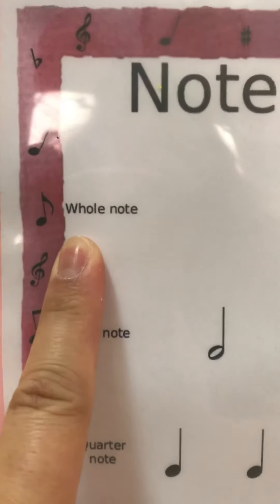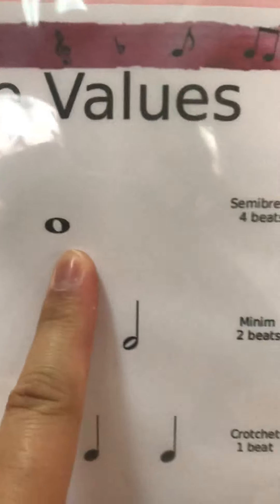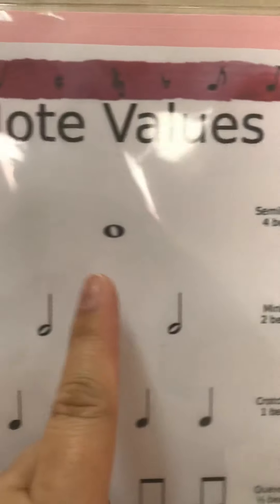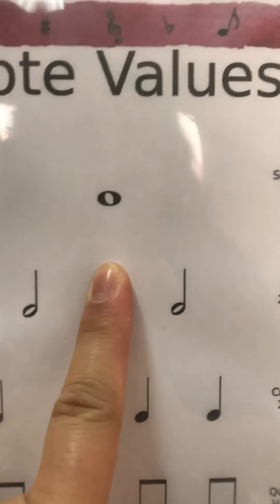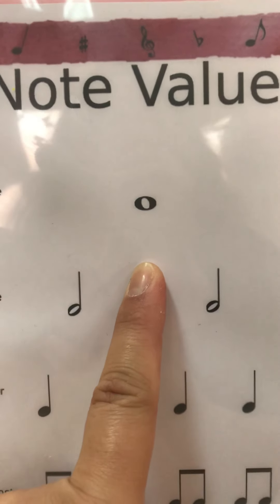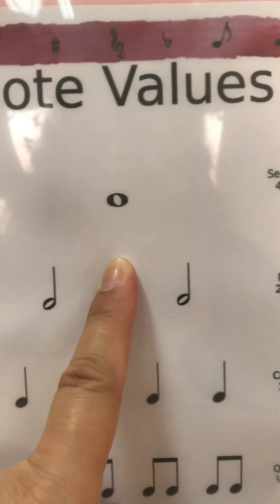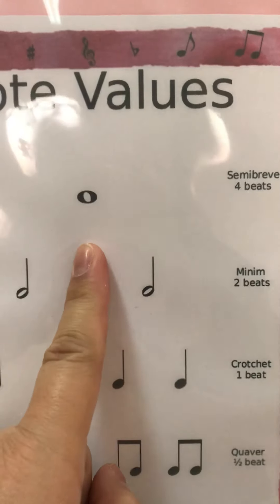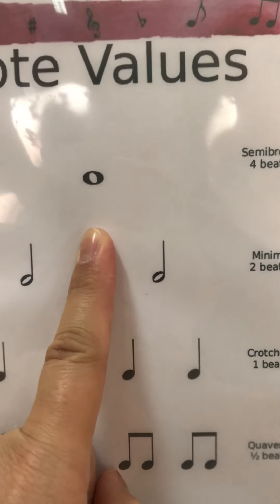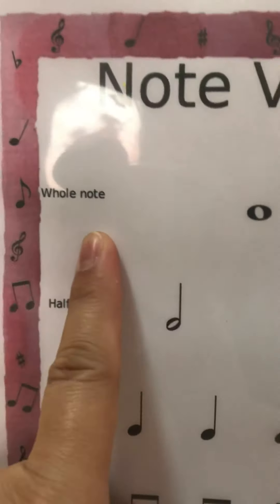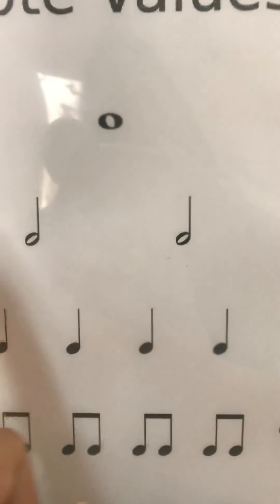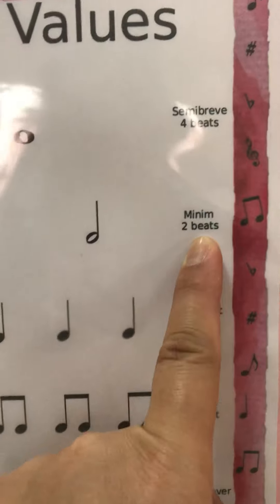Let's start with the whole note. This is the whole note, and semibreve for the British. The whole note has four counts, so if it is four-four time, we are going to count like this: one, two, three, four — for the whole note or the semibreve note.